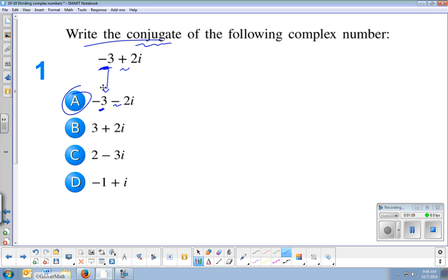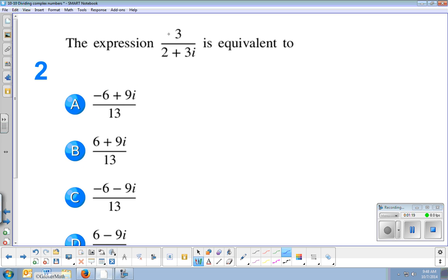The negative 3 stays negative 3, but the second piece, the plus 2i, turns to negative 2i. And so that's what's happening here. Okay, but let's now use it.